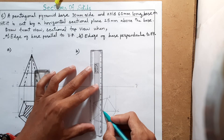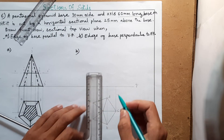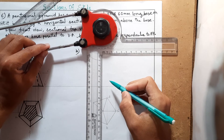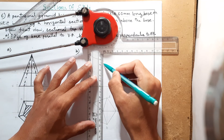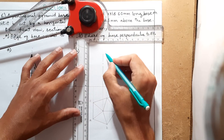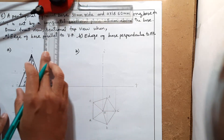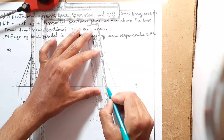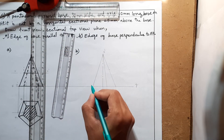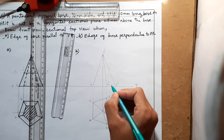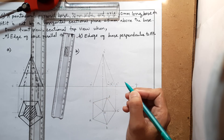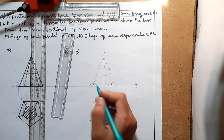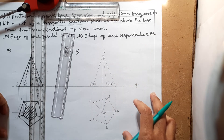From the center, project the axis upward. The axis height is 60 mm, so go vertically upward 60 mm — that is the apex O-dash. Join the apex with all corners of the base: A-dash, B-dash, C-dash in front, then D-dash and E-dash at the back. We started numbering from the bottom-left corner so they appear in order a, b, c then back side d and e in the front view.